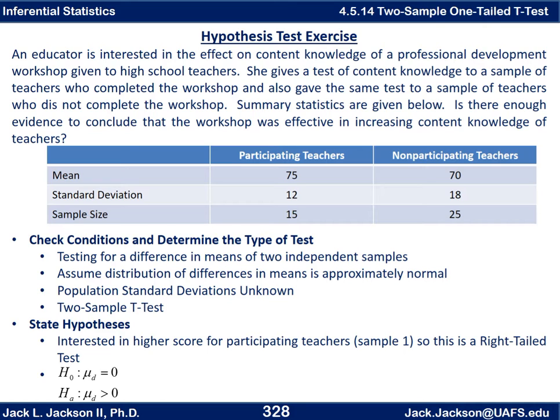The first thing we need to do is decide what sort of test or inference procedure we're doing and be sure that you check that all the conditions are satisfied. Notice here that we're testing for difference in means of two independent samples. The population standard deviations are unknown, and let's assume that the distribution of differences in means is approximately normal. That wasn't explicitly stated, but without that we cannot go on. If that's the case, then we can go ahead and use a two-sample t-test.